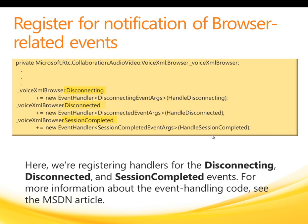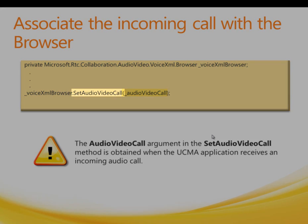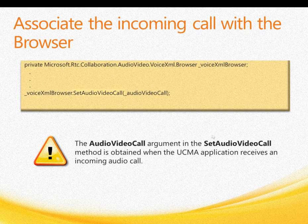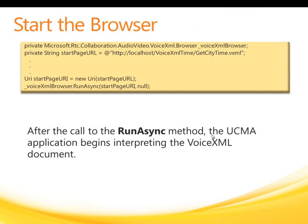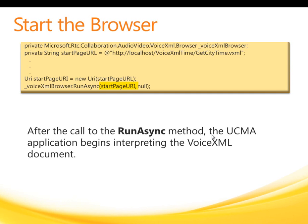The disconnecting event and the disconnected event are not raised under typical circumstances — they are raised when the call ends unexpectedly. For more information about these event handlers, see the associated technical article on MSDN. A browser instance communicates by means of an audio-video call object. By calling the setAudioVideoCall method on the browser, we provide the necessary call object. The final step is starting the browser instance using a call to the runAsync method on the browser instance, passing the URL of the VoiceXML document. This causes the VoiceXML document to be loaded and interpreted.